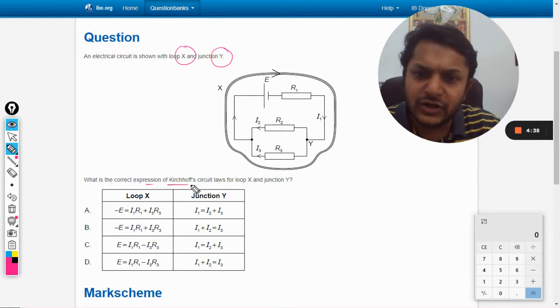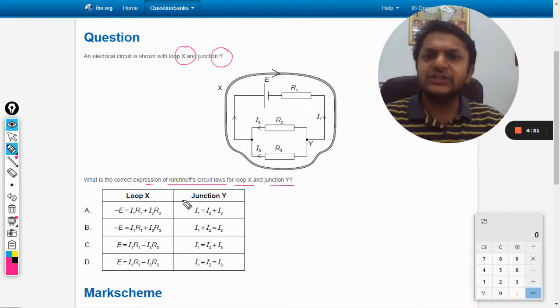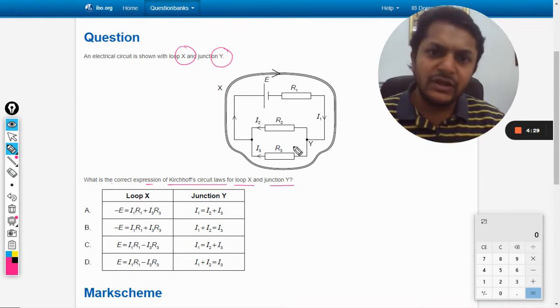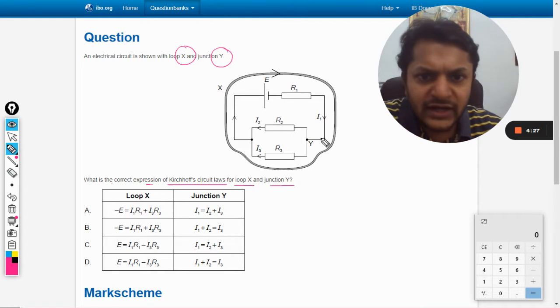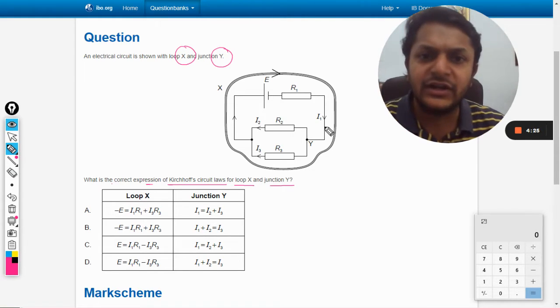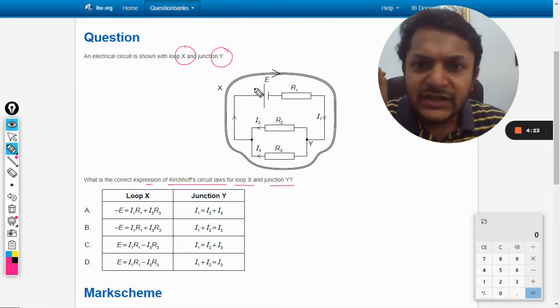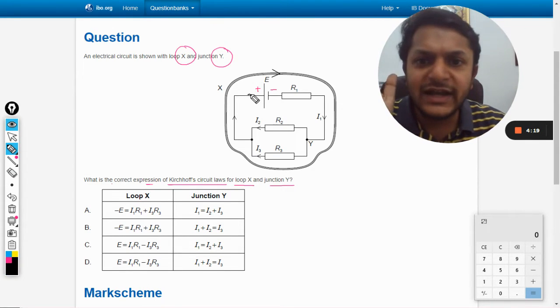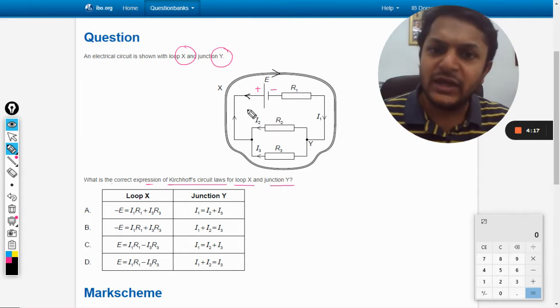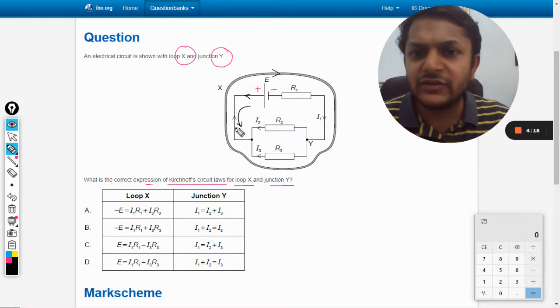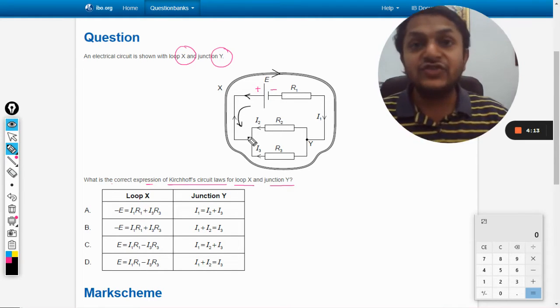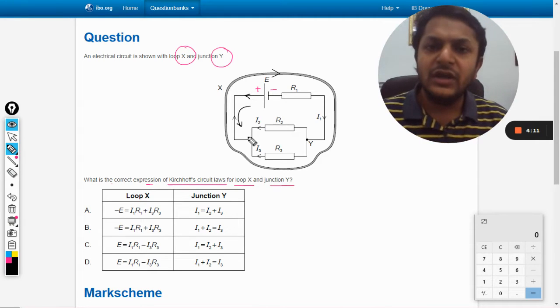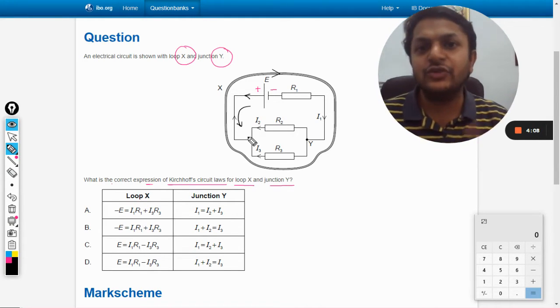For junction Y it will be simple. They have assumed the direction of current i1 is this - see, this is the positive terminal and this is the negative terminal. So we know that current will be going in this way, current will definitely go in this way, but the direction as given in your question is opposite to the direction that is obvious.